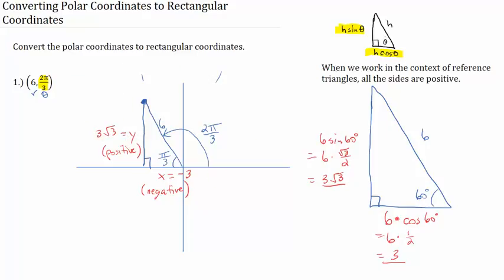And now we can come up here and answer the question. This polar ordered pair equals the ordered pair negative 3 for x, positive 3 square roots of 3 for y. Very good. Let's try another one.